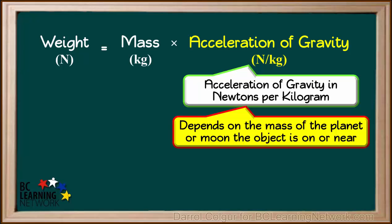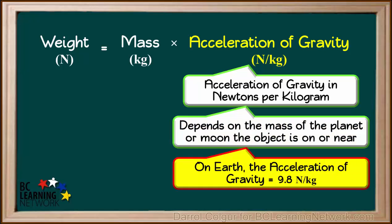The value for the acceleration of gravity depends on the mass of the planet or moon the object is on or near. On Earth, the acceleration of gravity is equal to 9.8 newtons per kilogram.